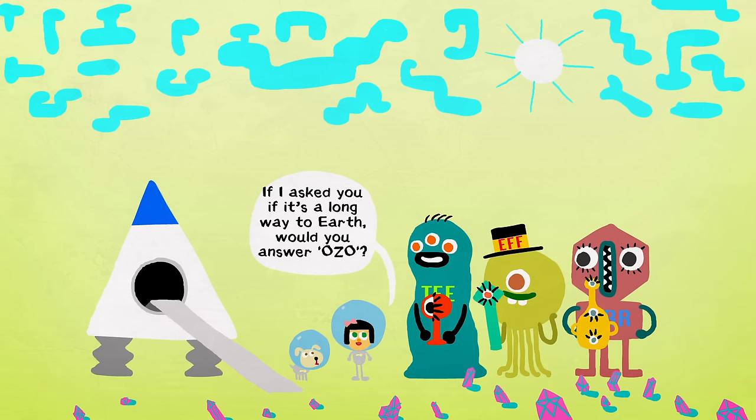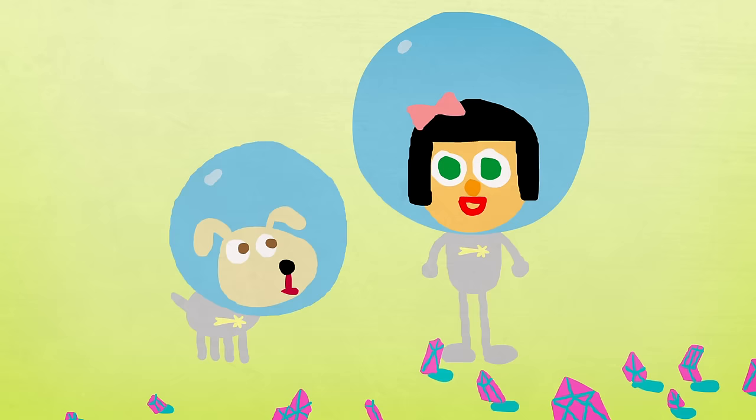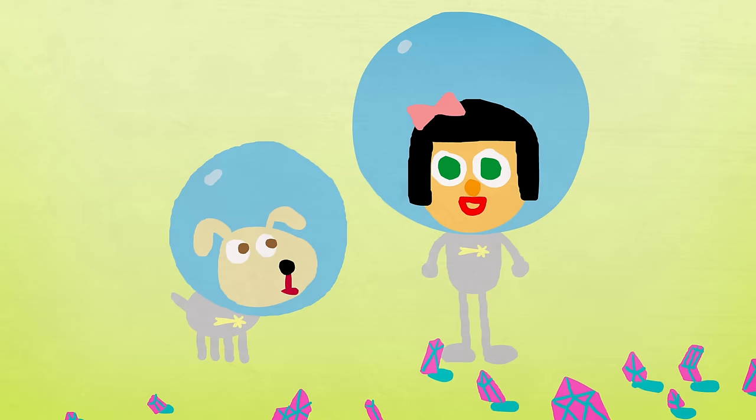The satisfied overlords help you repair your ship, and you prepare for takeoff. Allowed one final question, you ask T if it's a long way to Earth, and he answers ozo. Too bad you still don't know what that means.